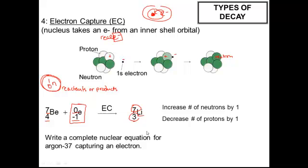Our example here is argon-37. So argon-37. The atomic number is 18. If it undergoes electron capture, what will we get? 37 plus 0 is 37. 18 minus 1 is 17. So we get chlorine-37.